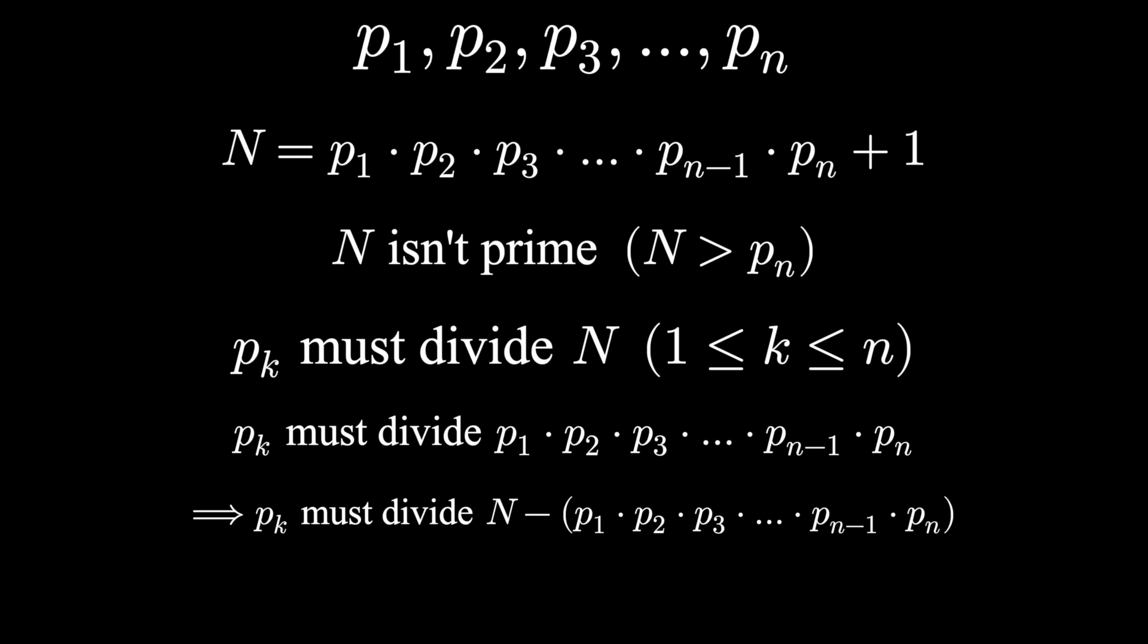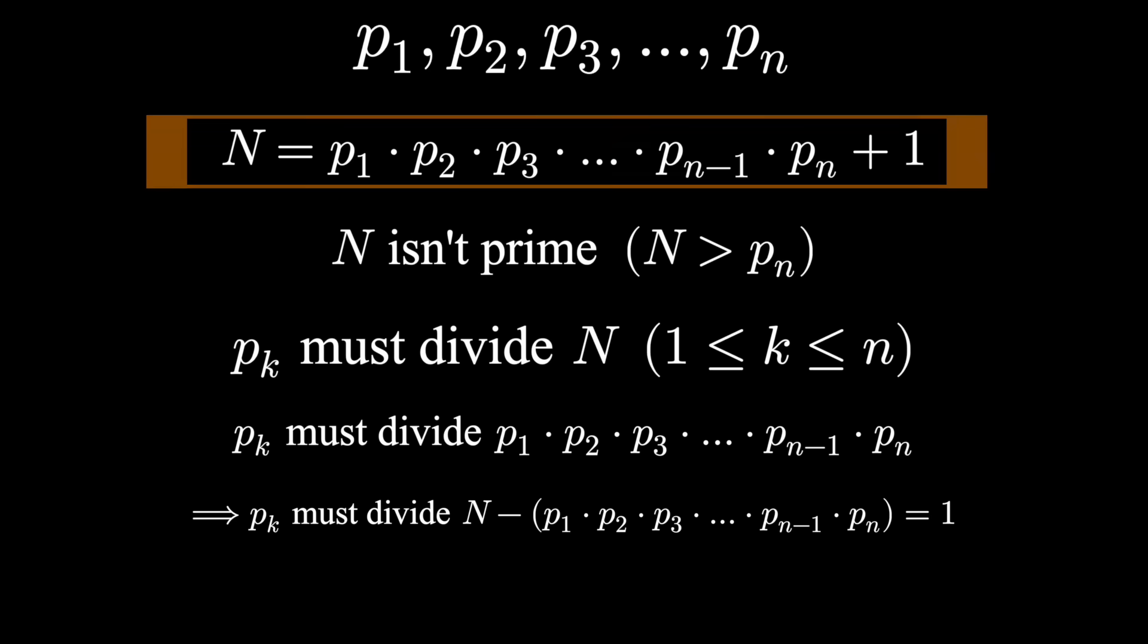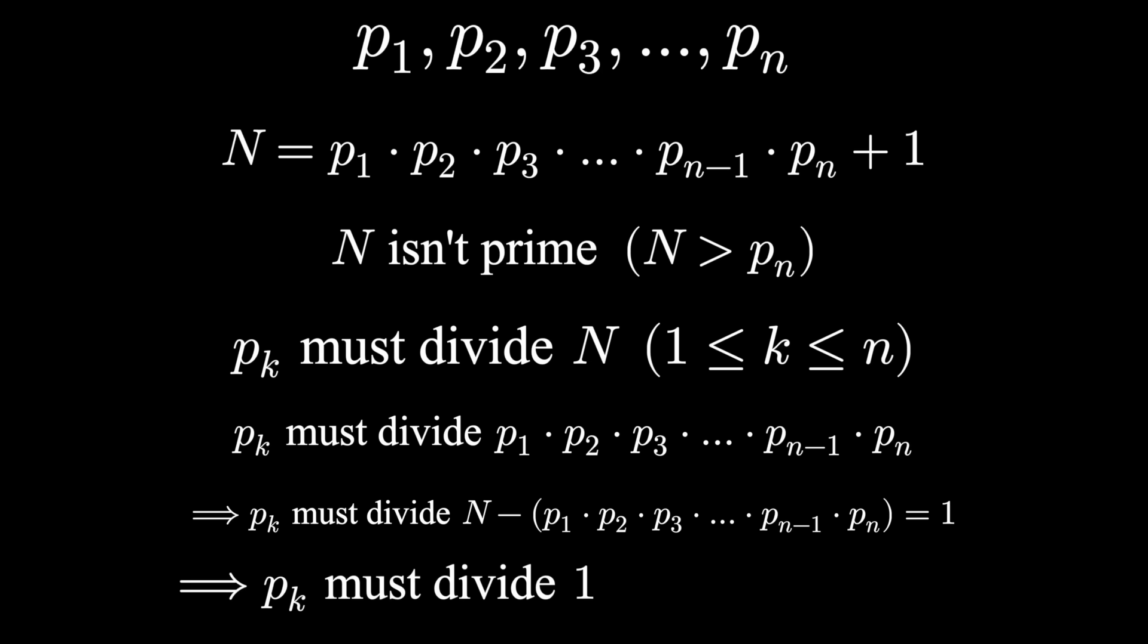It also must divide n minus this product, which happens to equal 1. We're saying this prime divides the left-hand side, which means it also must divide the right-hand side. Our prime must divide 1.